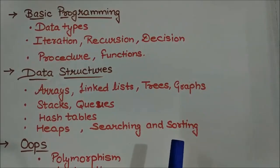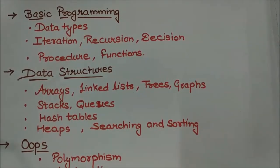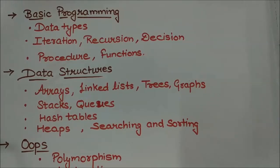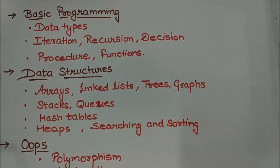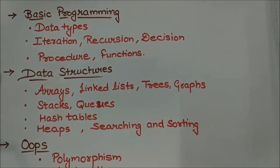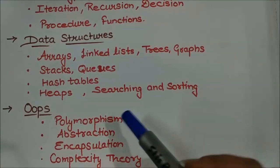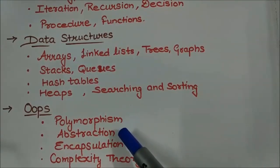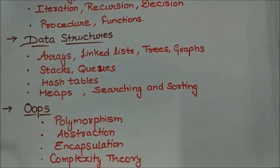The second category is data structures. In data structures you have to prepare arrays, linked lists, trees, graphs, stacks, queues, hash tables, heaps, searching and sorting. Apart from this, some other topics like polymorphism, abstraction, encapsulation, and complexity theory you have to prepare for this section.